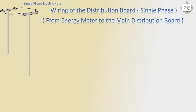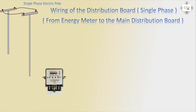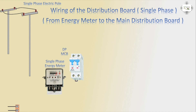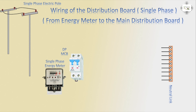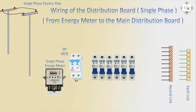Components include: single-phase energy meter, single-phase DP MCB, neutral link bar, earth link bar, neutral connector bar, earth connector bar, and SP6 breakers used in the HDB box.